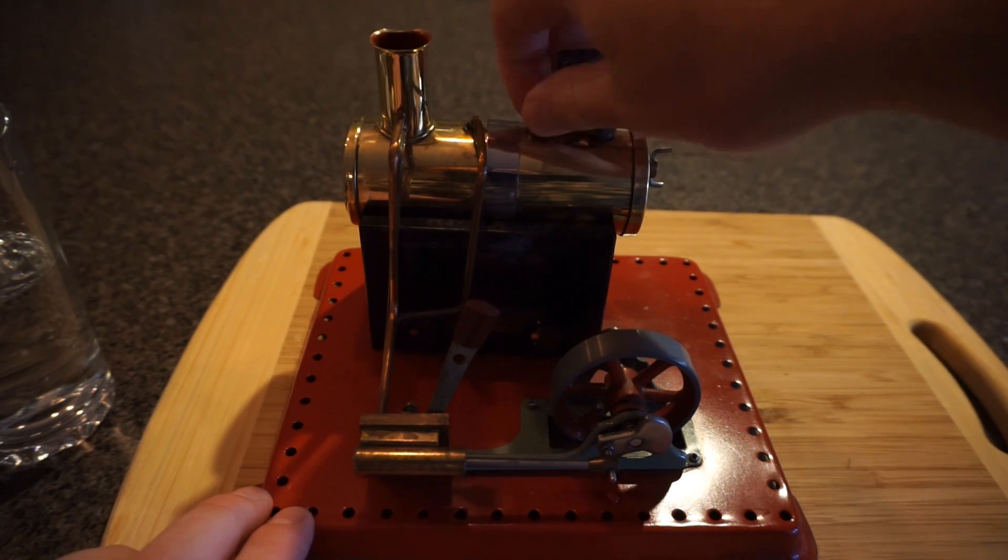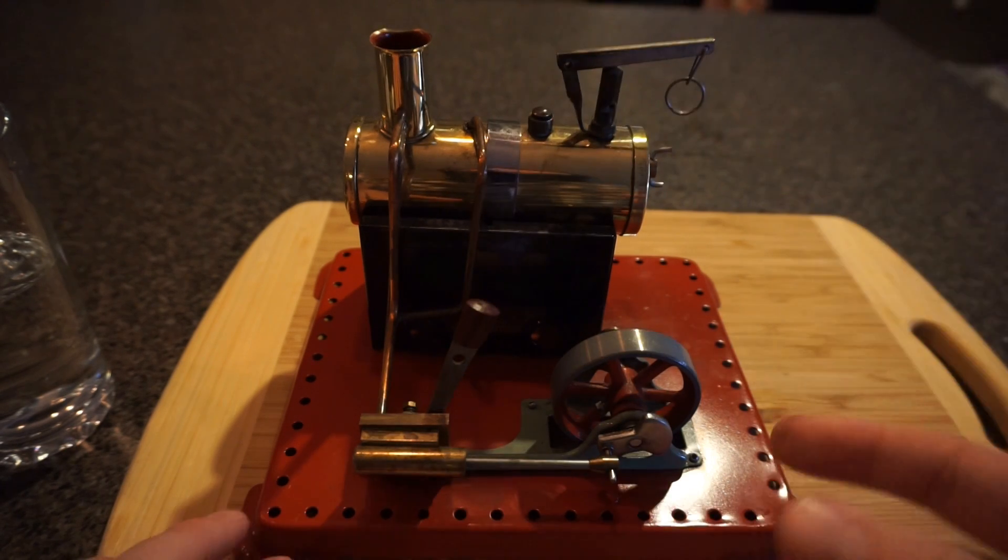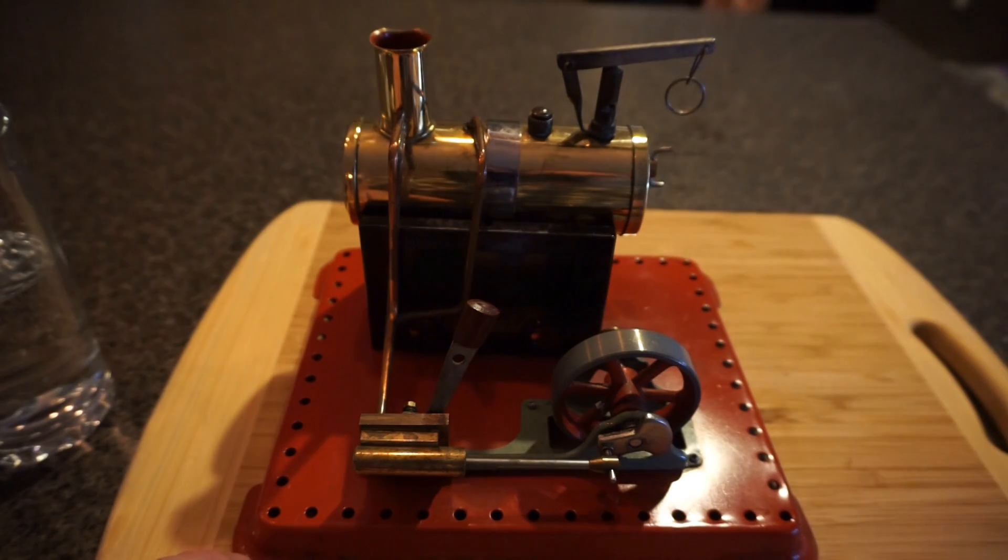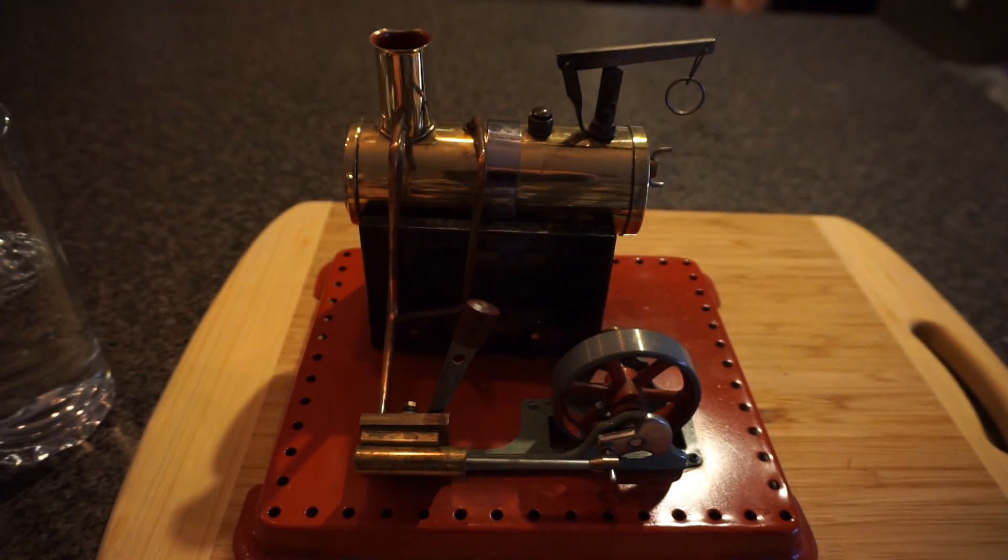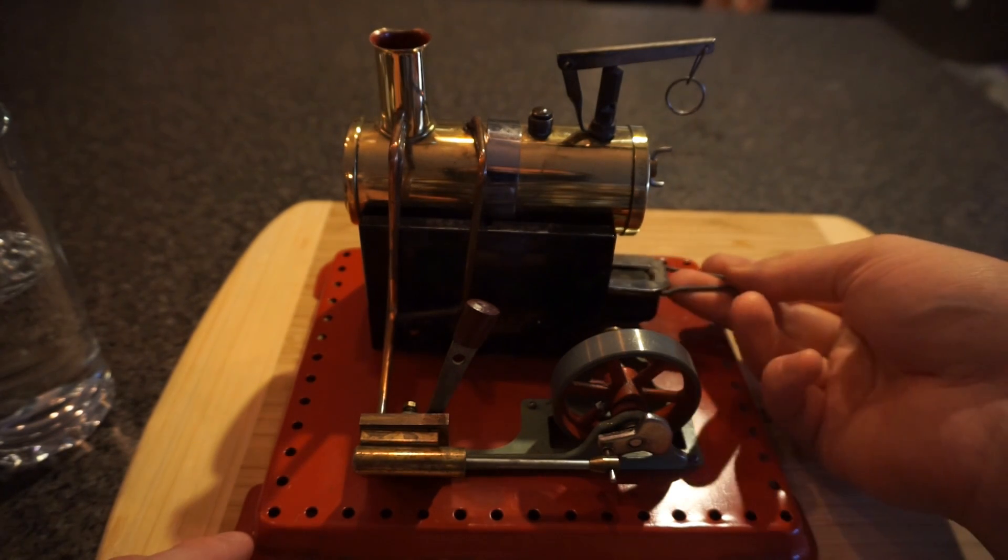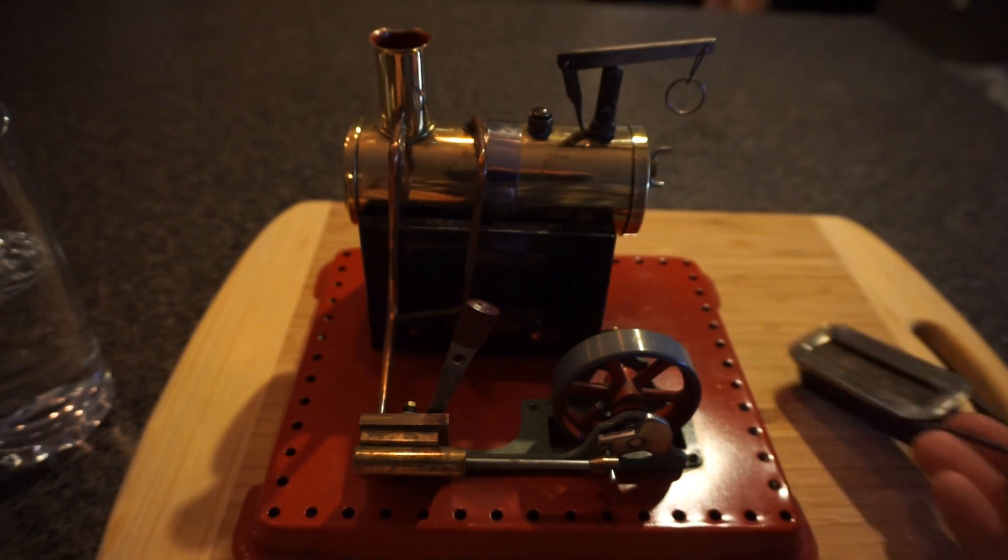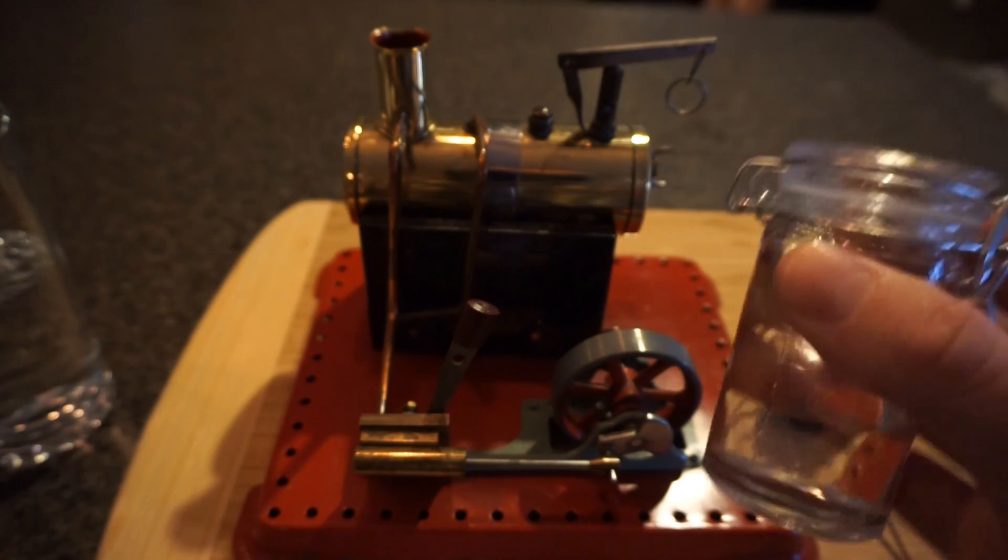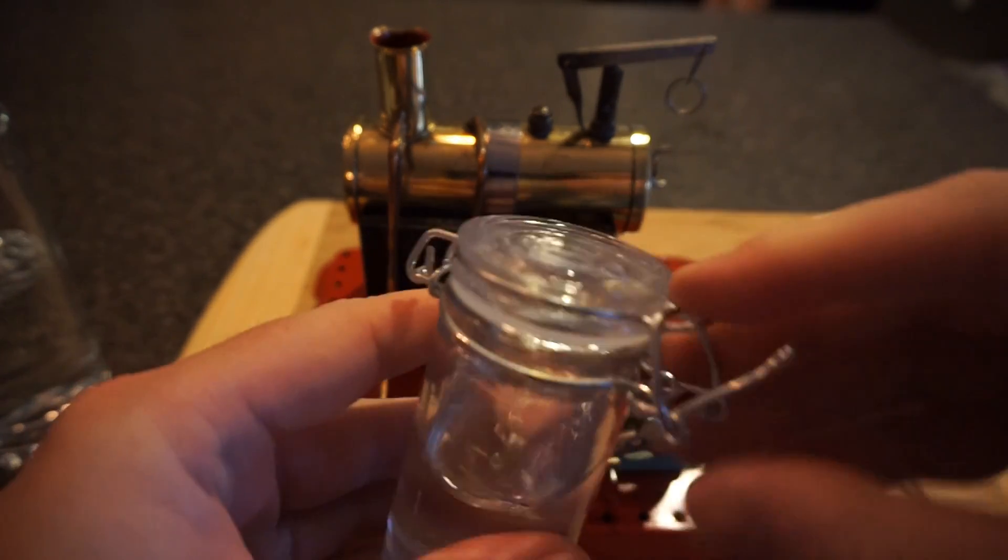So these can either run on solid fuel which are little white bricks that you can light on fire and then you can put them underneath the boiler here, but this one runs on liquid fuel and it comes with this which slots underneath our boiler and we top that up with our liquid fuel which in this case is ethanol. It looks like water but it doesn't smell like it and it's flammable so we're going to use some ethanol.